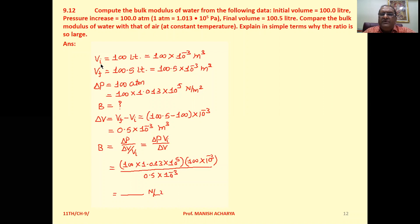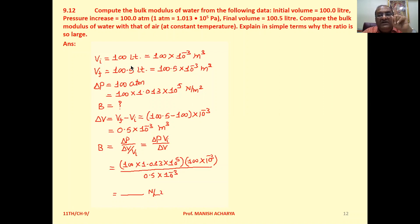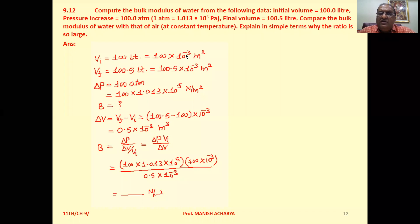Initial volume is 100 liters. We know 1 liter equals 10 raised to minus 3 meter cube. So 100 liters equals 100 times 10 raised to minus 3 meter cube.